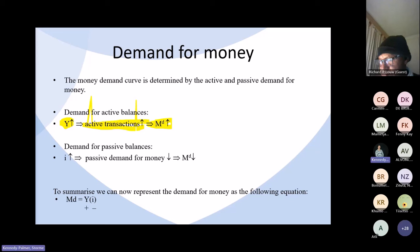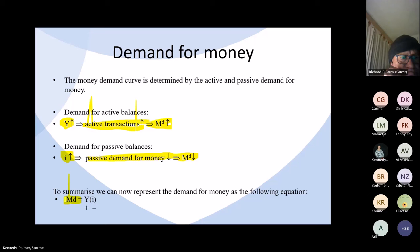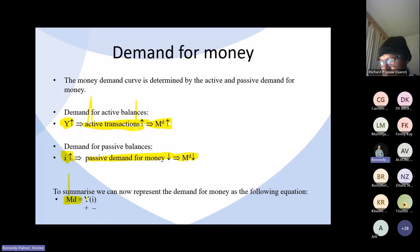In simple words: when the interest rate goes up, the demand for money goes down, and vice versa — there is a negative relationship between interest rates and the demand for money. To summarise, the demand for money is a function of the nominal level of output and income and the interest rate. The positive sign under Y indicates a positive relationship, and the negative sign under the interest rate indicates a negative relationship.